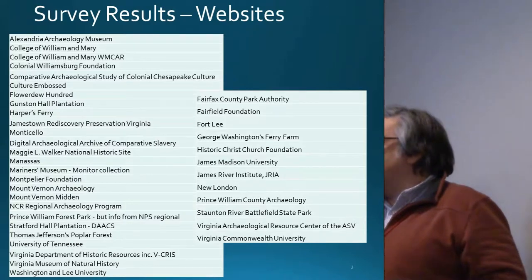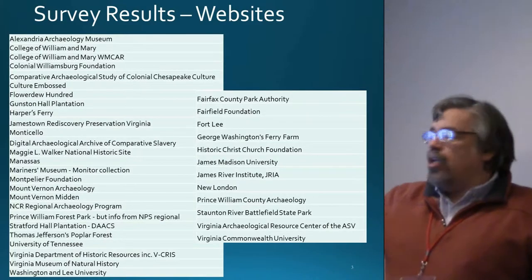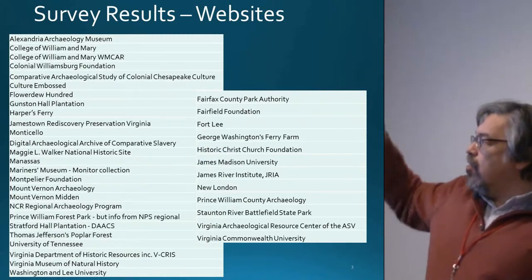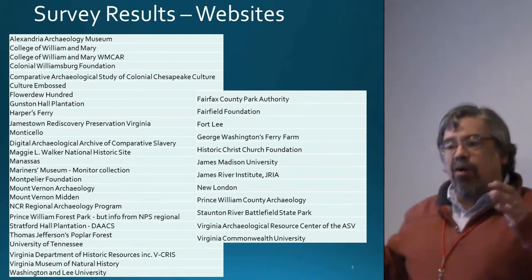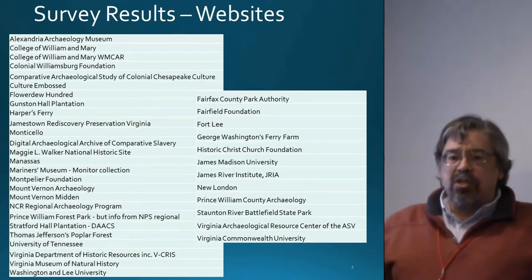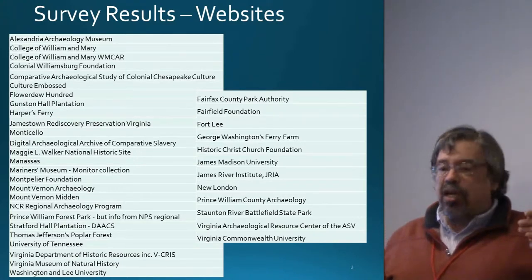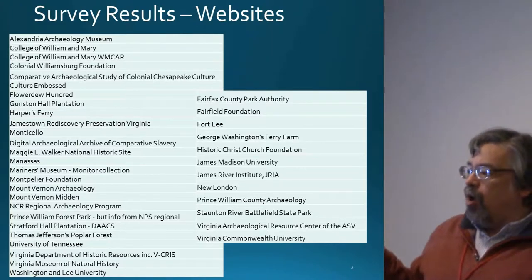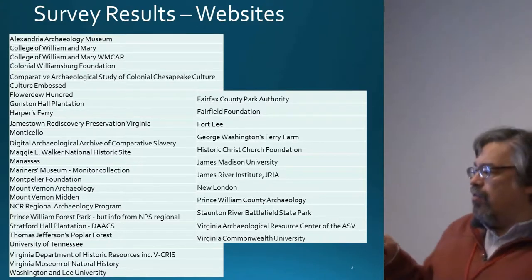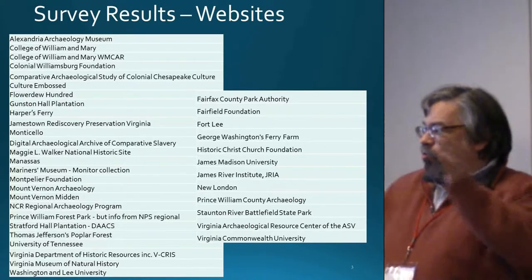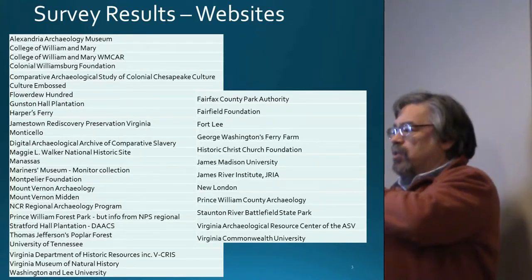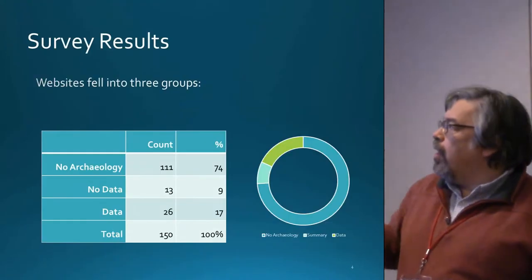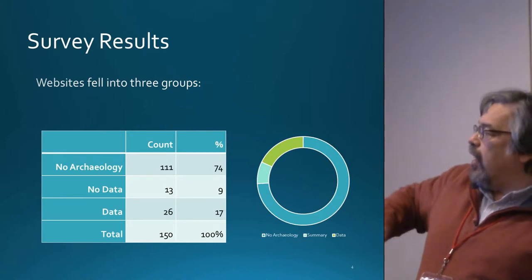These are the sites I identified that had archaeology. The ones on the left, the longer list, actually have what was defined as archaeological data. The ones on the right had archaeology but no data. There was a total of 150 institutions in Virginia identified as having an archaeological component. 74% of those had no archaeology on their website at all, so we're already looking at just 26% of institutions that have archaeology on their site.